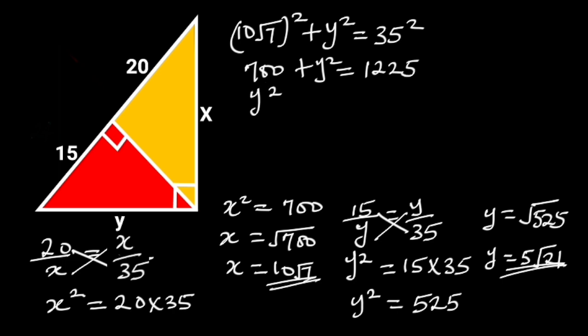So y squared will be 1225 minus 700, which will give us y squared is equal to 525.